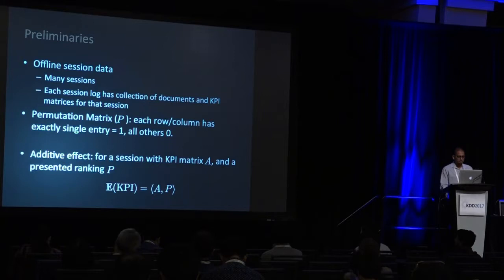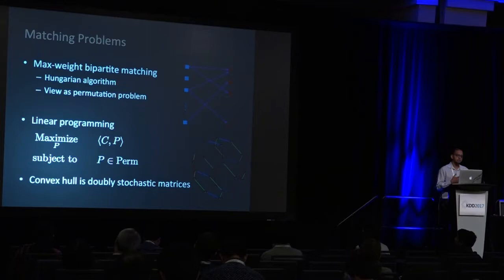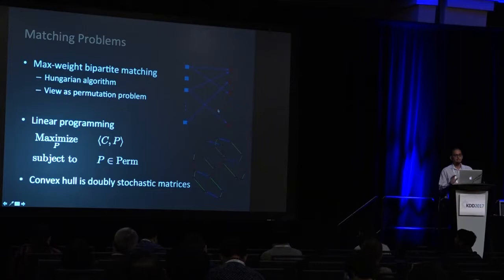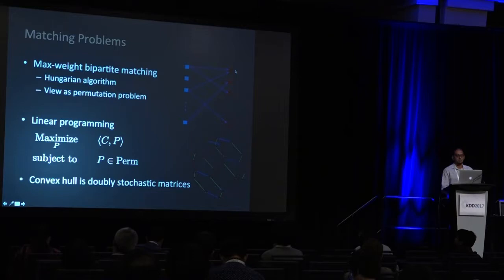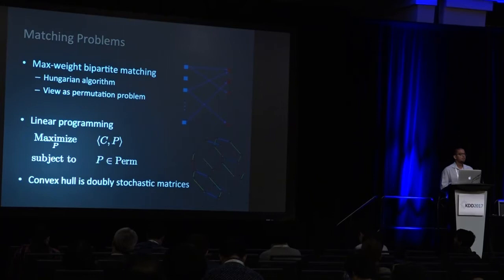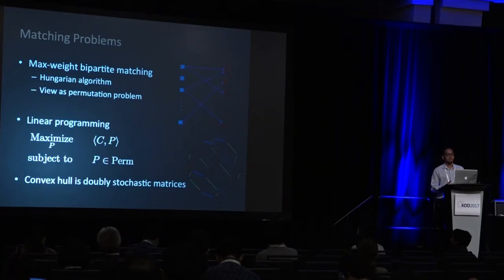The problem of assigning items to slots is known in combinatorial optimization as a matching problem — more specifically, a max weight bipartite matching problem. You have items on the left, positions on the right, and a bipartite matching assigns items to slots. For each KPI, the edge weights correspond to the entries of that KPI matrix. To solve a max weight bipartite matching problem we have the Hungarian algorithm. We'll model this as a linear programming problem, taking a permutation view.